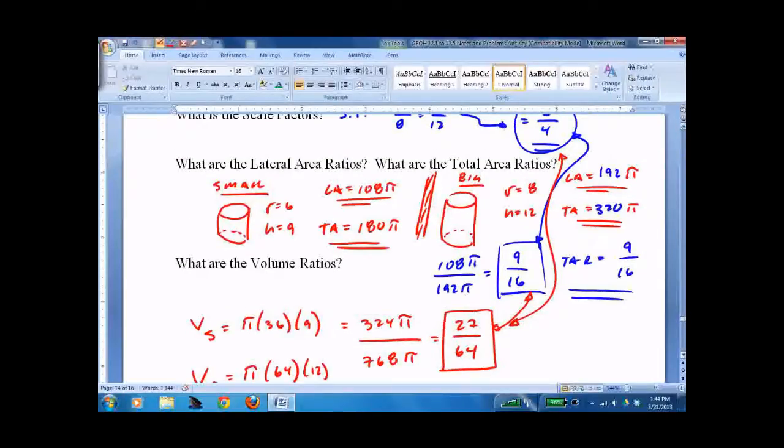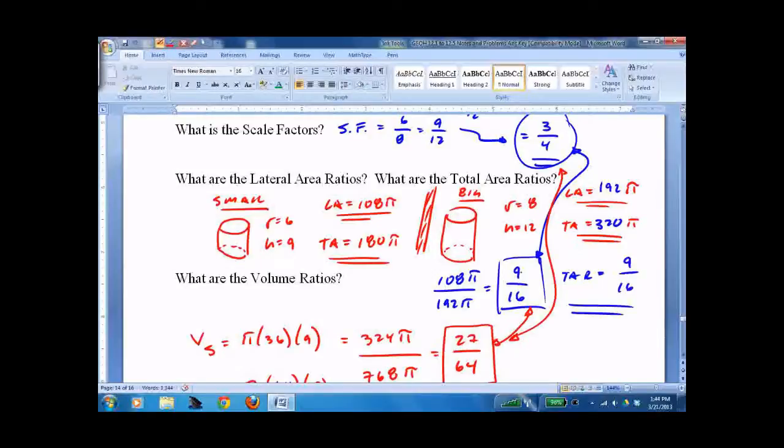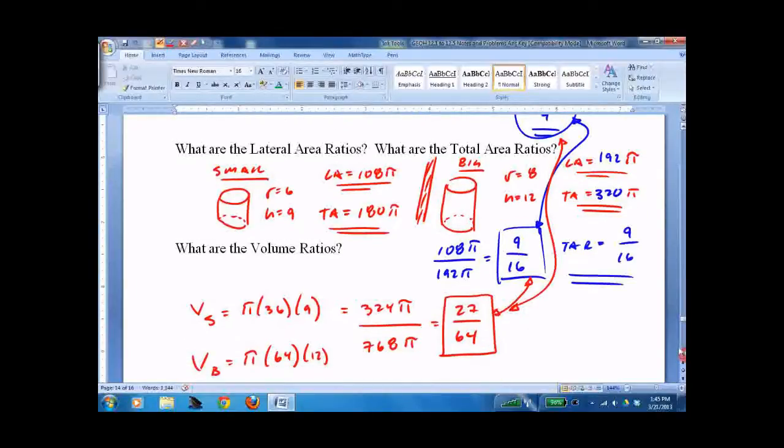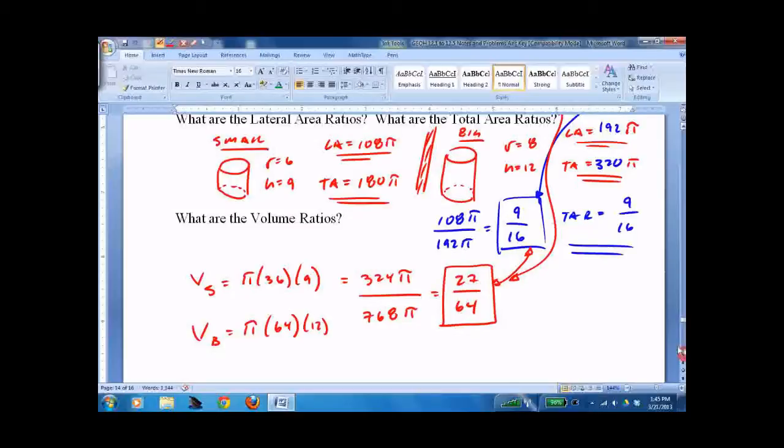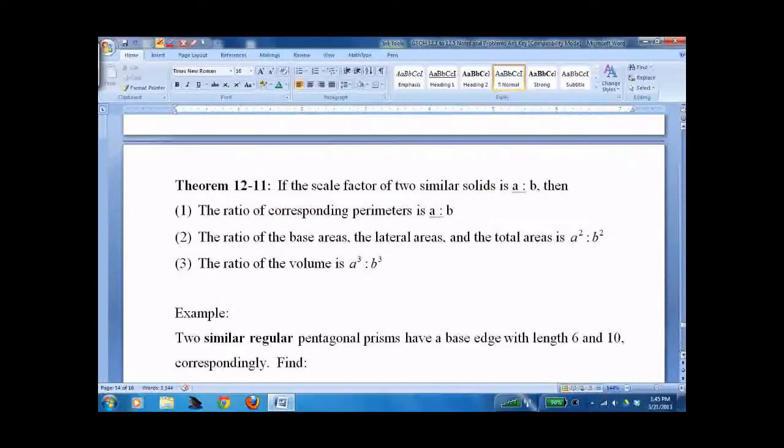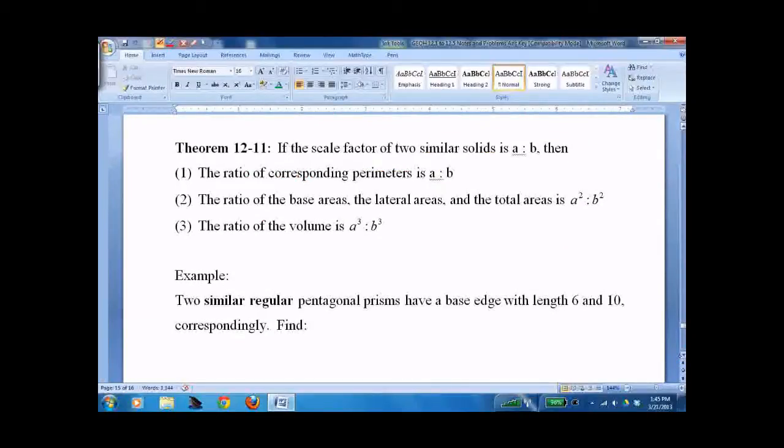What's the relationship? 3 squared is 9, 3 to the 3rd is 27. 4 squared is 16, 4 to the 3rd is 64.